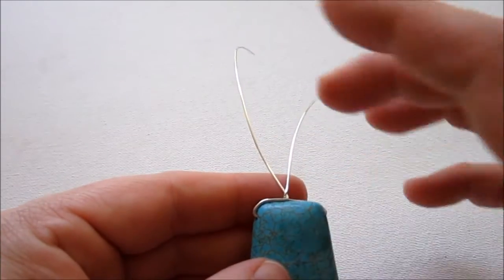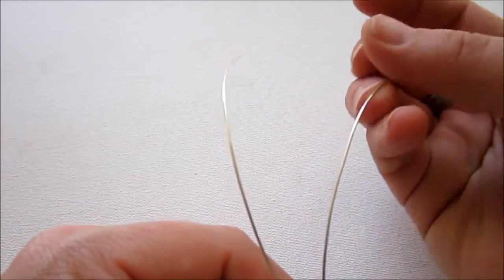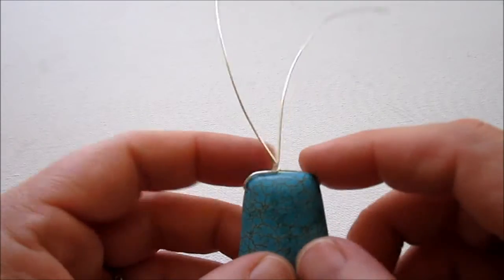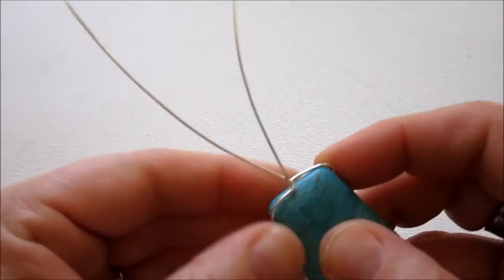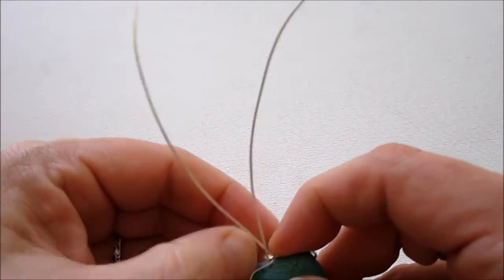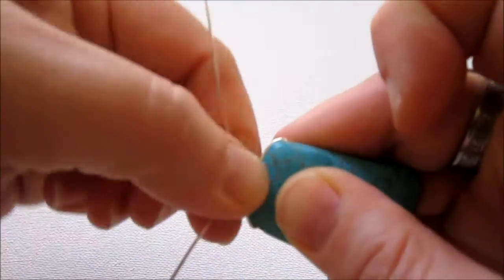So your bead should be centered in the middle of the wire. The wire should be twisted. You have plenty of wire up here. And as close to the bead as possible. This part here that comes across should be as close as possible. And I'm going to do a second twist just for stability.